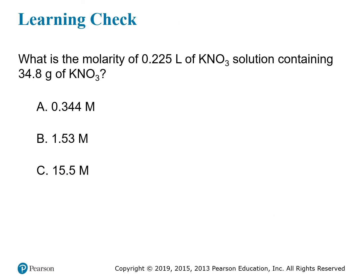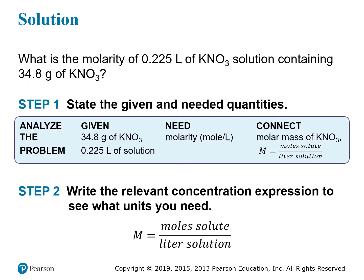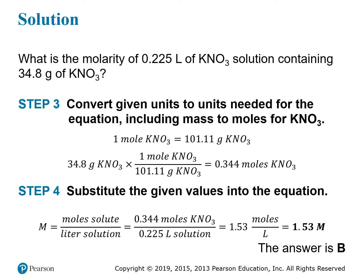Another example: what is the molarity of 0.225 liters of potassium nitrate solution containing 34.8 grams of potassium nitrate? Using the molar mass of KNO₃ (101.11 g/mol), we convert 34.8 grams to 0.344 moles. Molarity = 0.344 moles ÷ 0.225 liters = 1.53 M potassium nitrate. That's answer B.